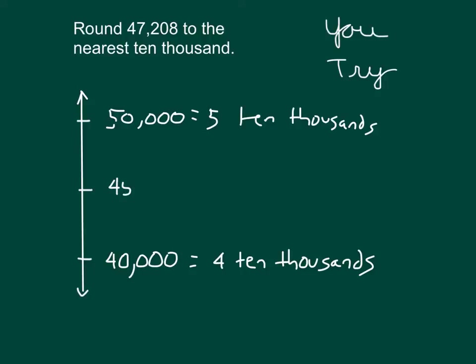Midpoint should have been labeled as 45,000. And then you place the 47,208 onto your number line. In this case, 47,208, is it closer to 40,000 or is it closer to 50,000? It's past our midpoint, so it's closer to 50,000.